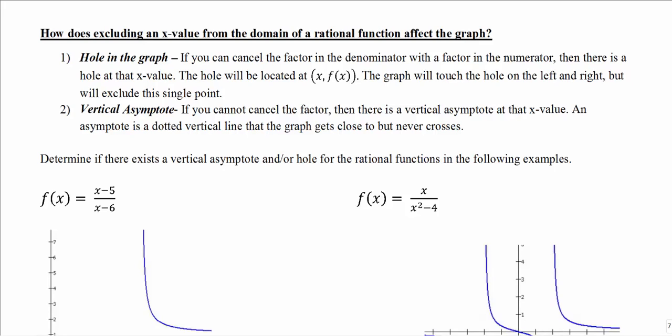One last topic we want to talk about is how excluding an x value from the domain of a function — specifically rational functions — affects the graph. In college algebra you might have seen two different ways: one would be a hole in the graph and the other would be a vertical asymptote. Both of these deal with excluding a value from the domain because of the denominator.